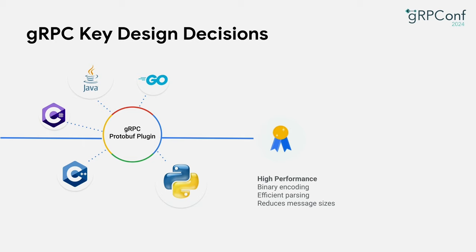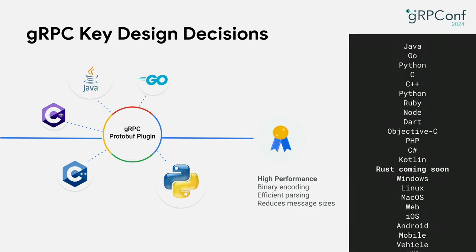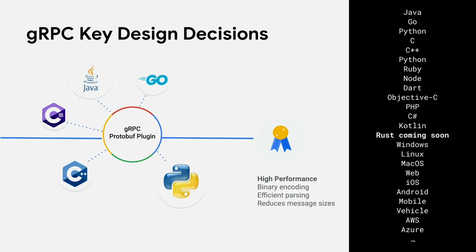Protobuf uses binary encoding — it is very efficient in parsing and reduces message sizes — all of which make gRPC high-performance and highly flexible compared with other RPC frameworks. gRPC boasts extensive support for languages and platforms, as evidenced from this list. And the exciting news, as Kevin mentioned, is that gRPC Rust is coming soon, so don't miss today's session if you want to learn more about it.